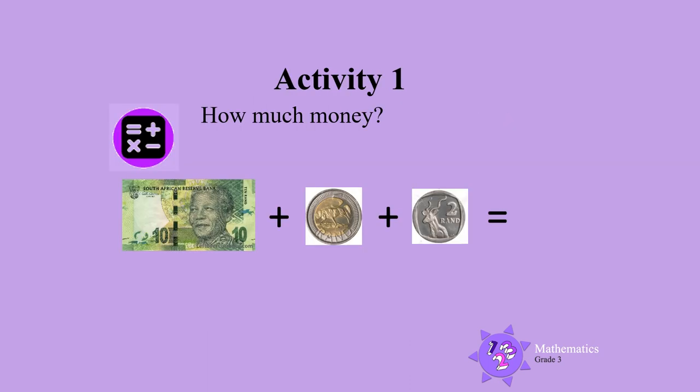Activity 1. How much money is there here? 10 rand, add 5 rand, add 2 rand is... If you got 17 rand, then you are correct. Well done!